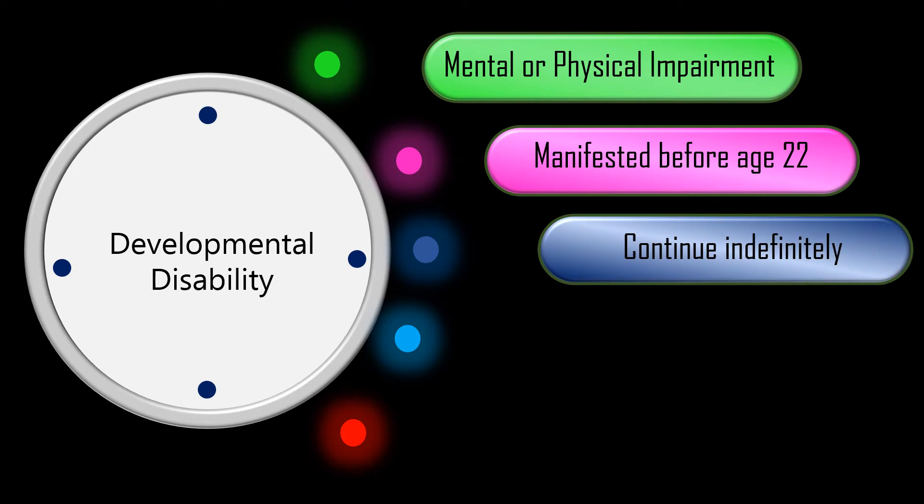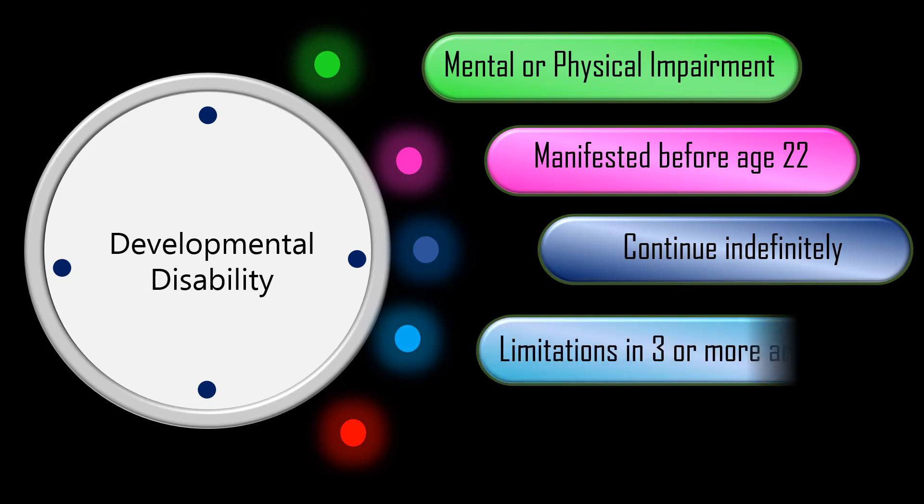Number three: likely to continue indefinitely. Number four: results in substantial functional limitations in three or more areas of major life activities like self-care, language, learning, mobility, self-direction, capacity for independent living, and economic self-sufficiency.